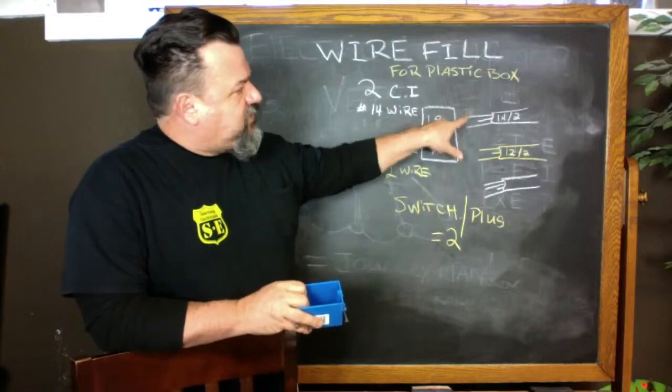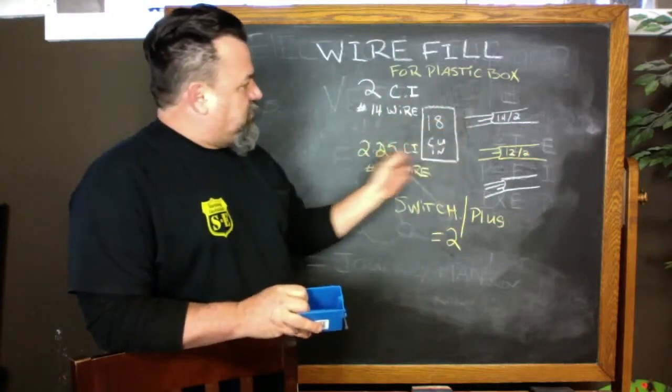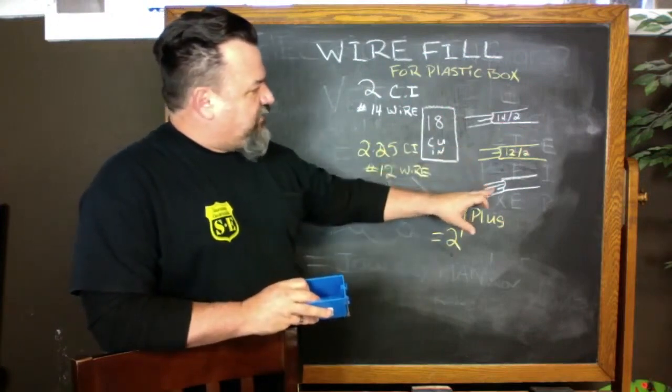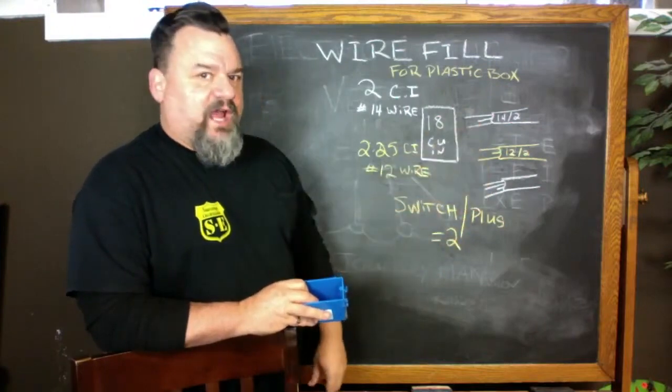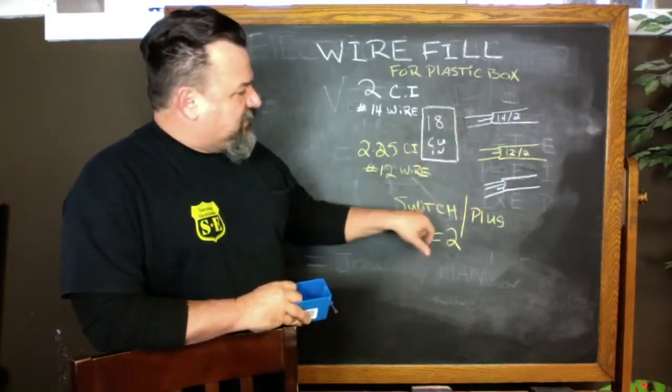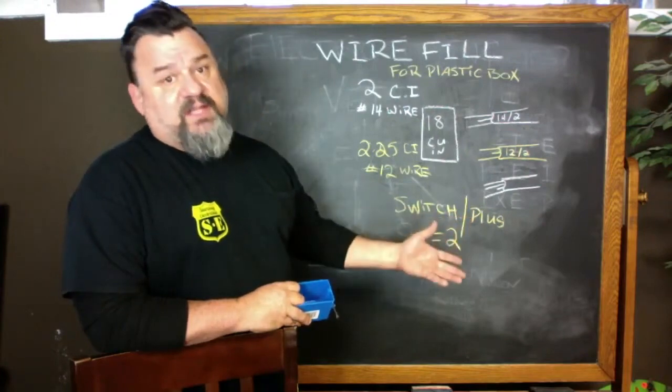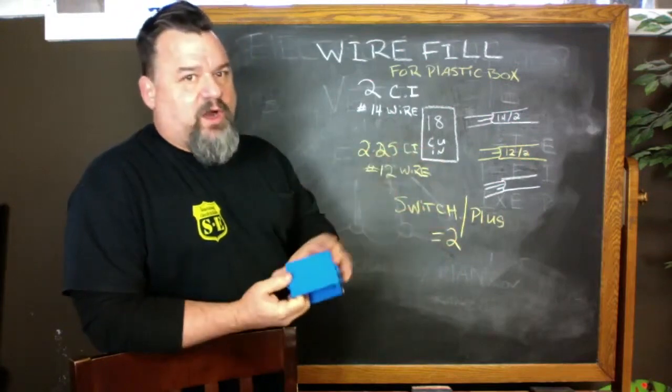We've got two, four because they're two cubic inches, two and a quarter, six, eight and a half, ten, twelve, fourteen and a half, plus the grounds, fifteen and a half. A switch or plug is a two, that's seventeen and a half. So we're right underneath it. It's as simple as that for wire fill.